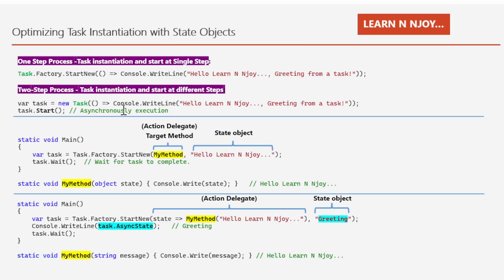In our last video we delved into the intricacies of task instantiation and explored two methods of starting tasks using lambda expressions. To recap: we had the one-step process where we used the task.factory.startNew method, and the two-step process where we instantiated the task with the task constructor and then started it separately with the start method.